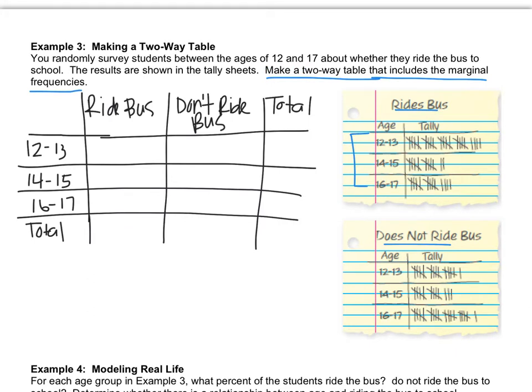All right, pause and copy my chart. Now we're just going to put numbers in place of our tally marks. So there were 5, 10, 15, there were 24 people in this age range that ride the bus. So let's just do that: 24. There were 12 people in the 14 to 15 range, and there were 14 people in the 16 to 17 range, which gives me a total of 20, 30, 40, 50 people.